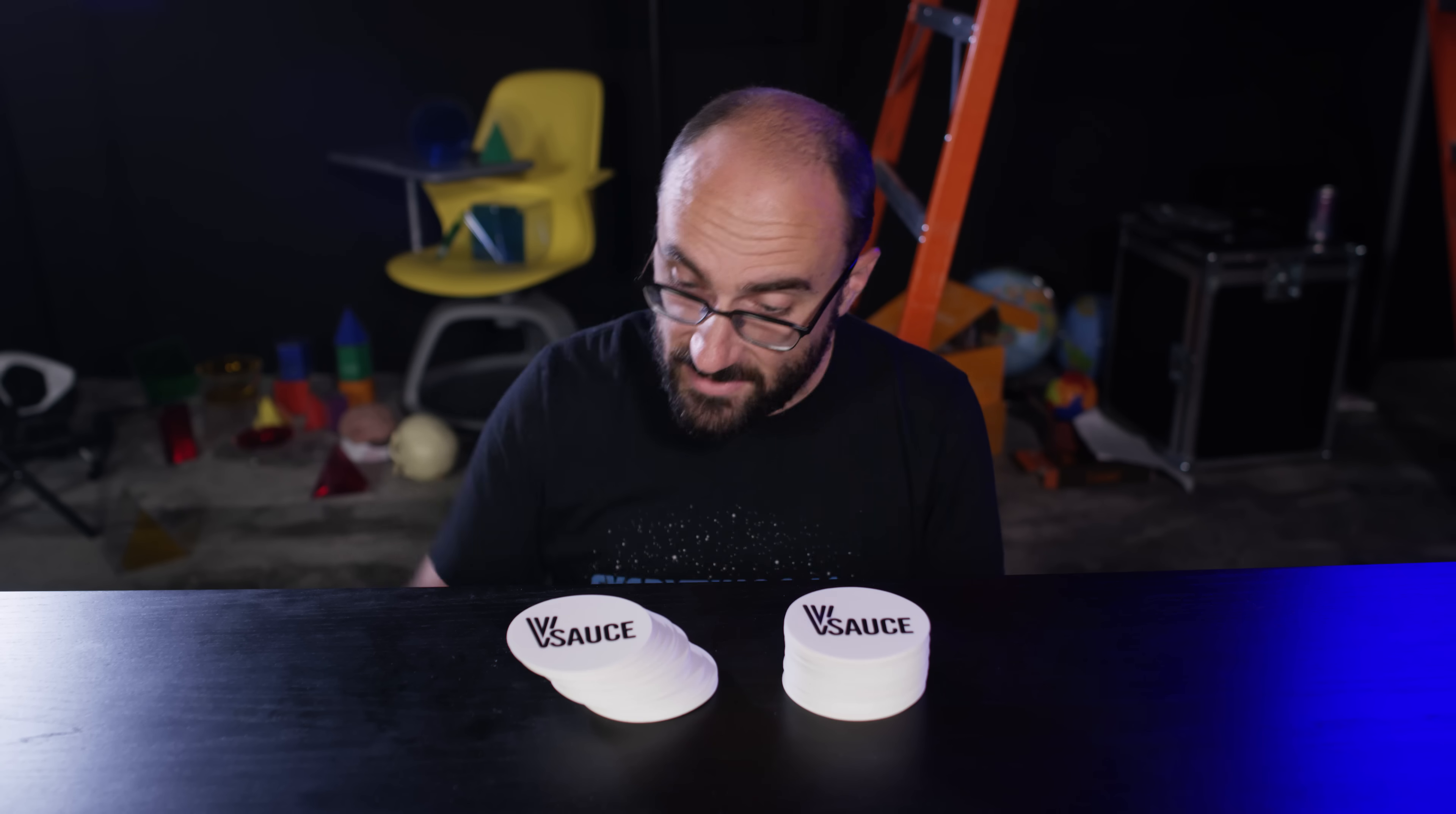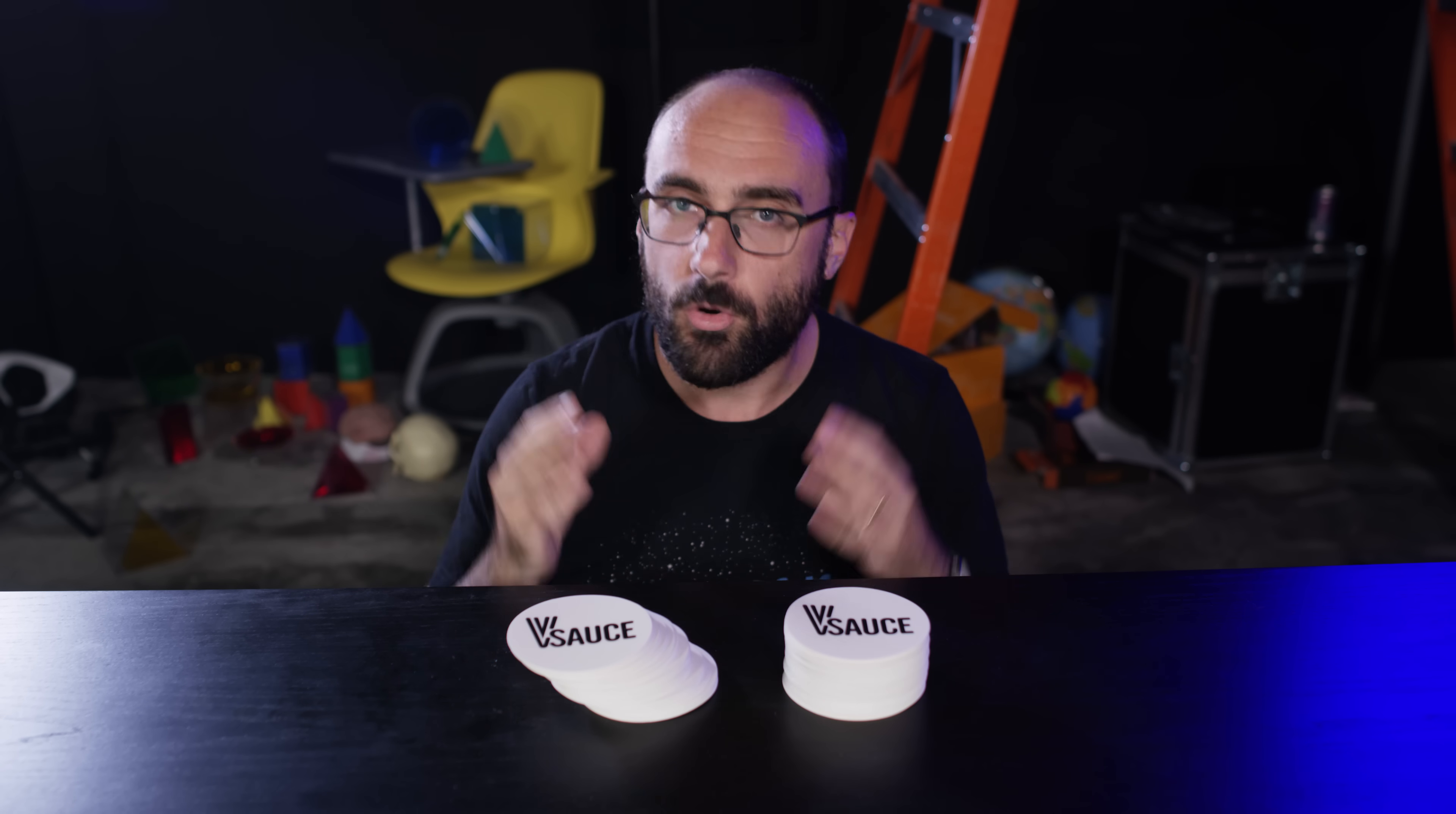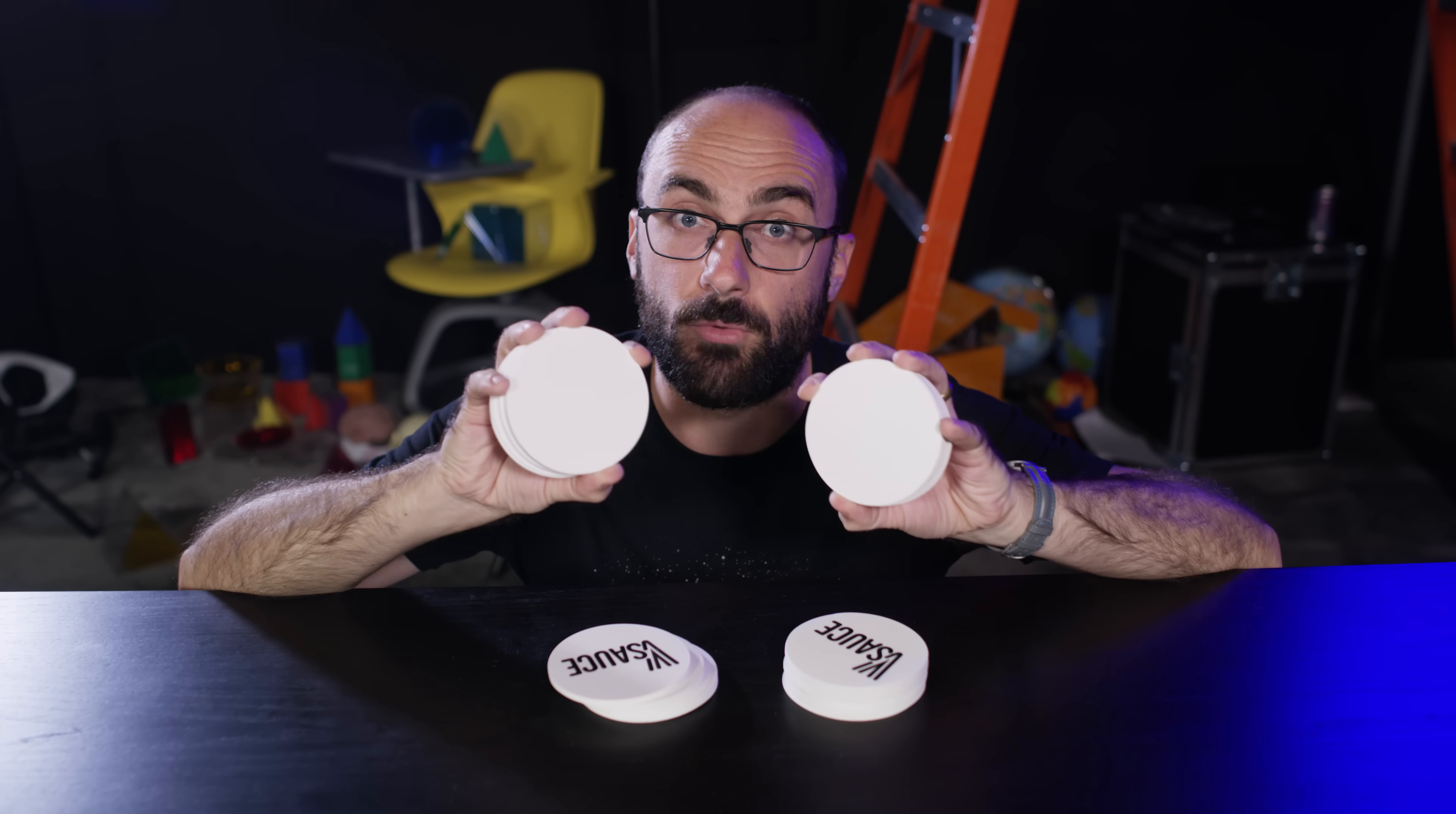And Cavalieri's principle ensures that they still have the same volume, because any cross section taken from down here, up here, in the middle, anywhere, will always give us a region of the same area as the other, because those regions are always equal area circles.